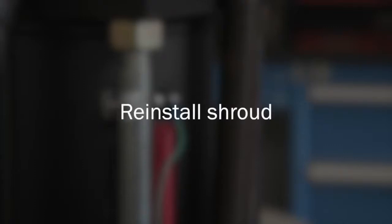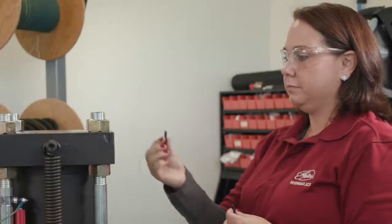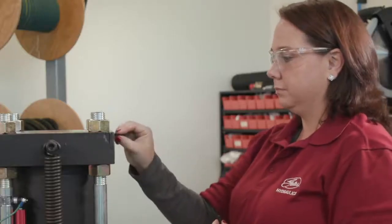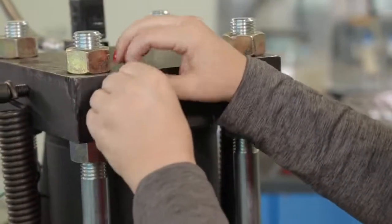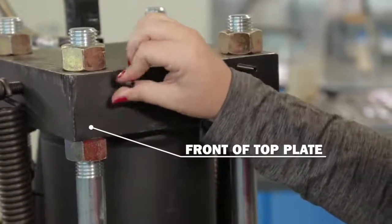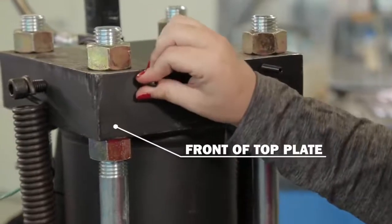Now you'll move on to reinstalling the shroud and attaching the electrical housing. Locate the hardware for the electrical housing and begin by installing the two threaded studs into the existing holes in the front of the top plate. Hand tighten securely.